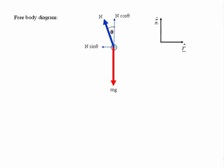So resolving the forces vertically and radially, first of all vertically, in other words in the z direction, the equation of motion is that N cos theta minus mg is equal to zero because there is no acceleration in the vertical direction.